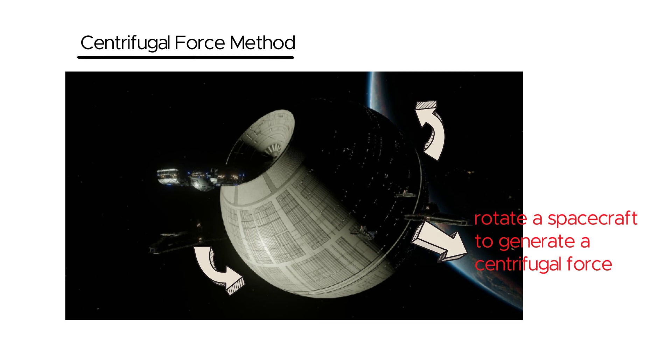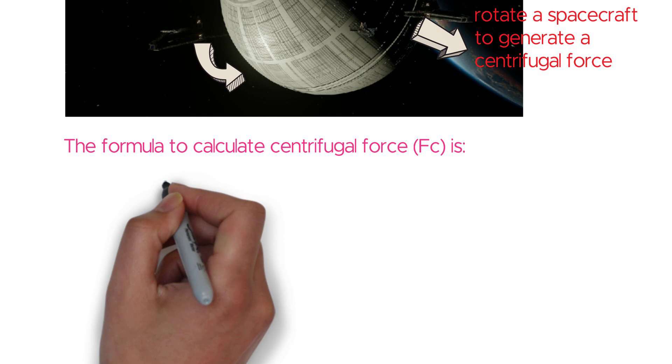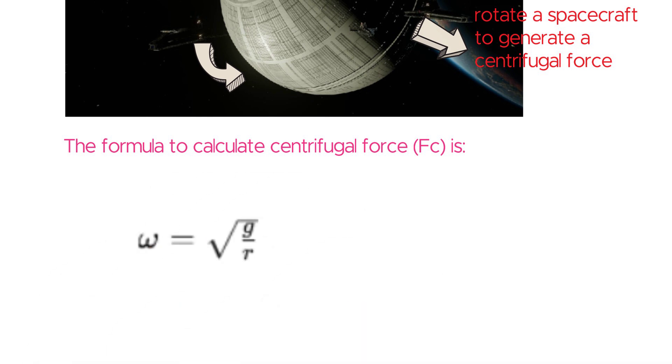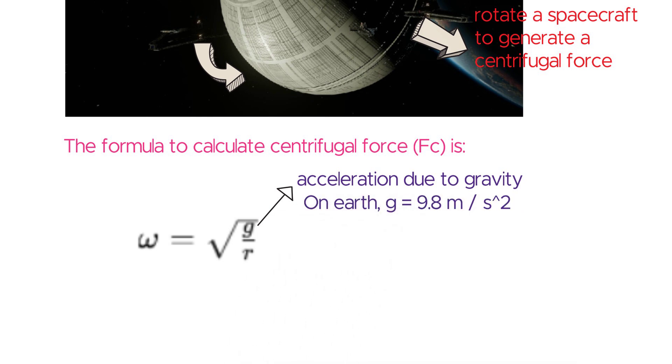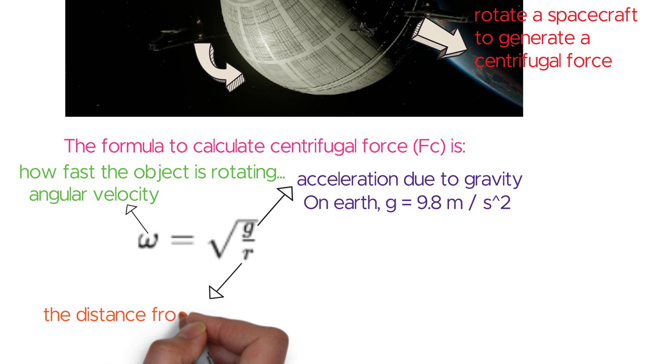The formula to calculate centrifugal force is this one. In this formula, g is the acceleration due to gravity. On Earth, the value of g is 9.8 meters per second squared. Omega is the angular velocity, which means how fast the object is rotating, and r is the distance from the center of rotation.